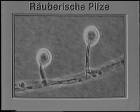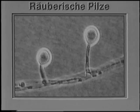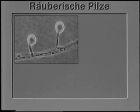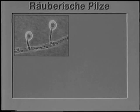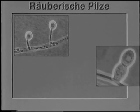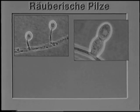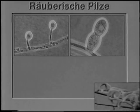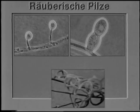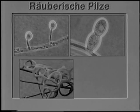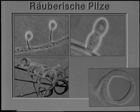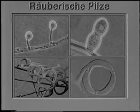The nematode-trapping fungi have developed a wide variety of trapping structures. Dactylaria candida captures nematodes with the aid of adhesive knobs. Monacrosporium cyanopagum uses adhesive branches. In Arthrobotrys oligospora, nematodes are trapped in an adhesive three-dimensional network. While in Dactylaria brochopaga, nematodes are trapped mechanically in constricting rings.